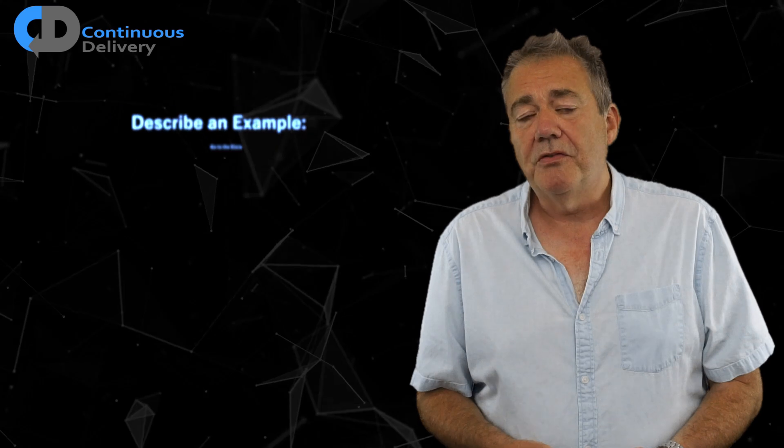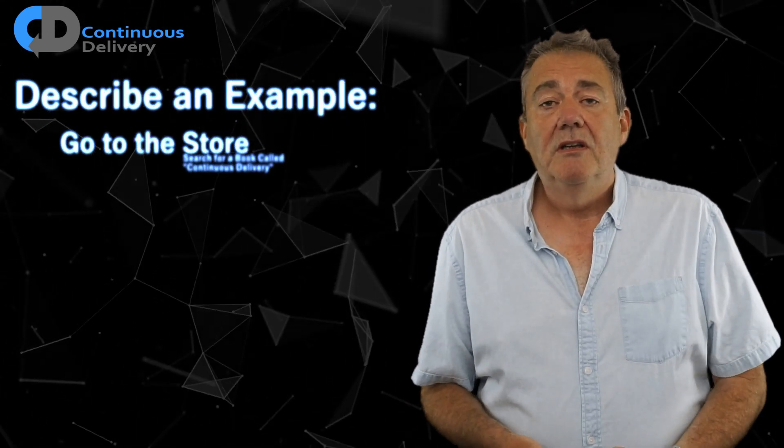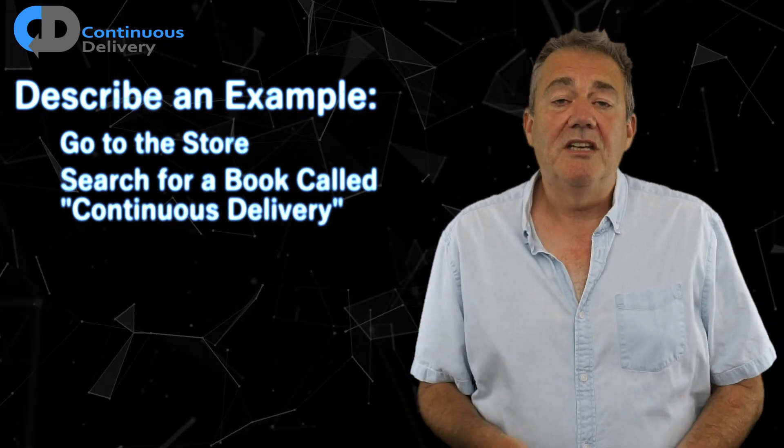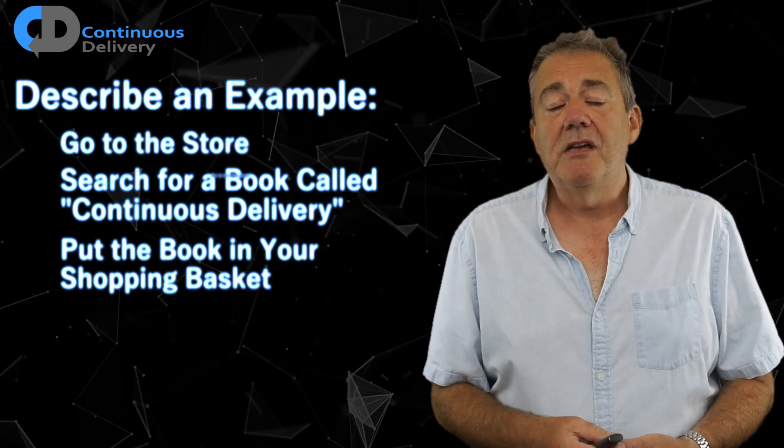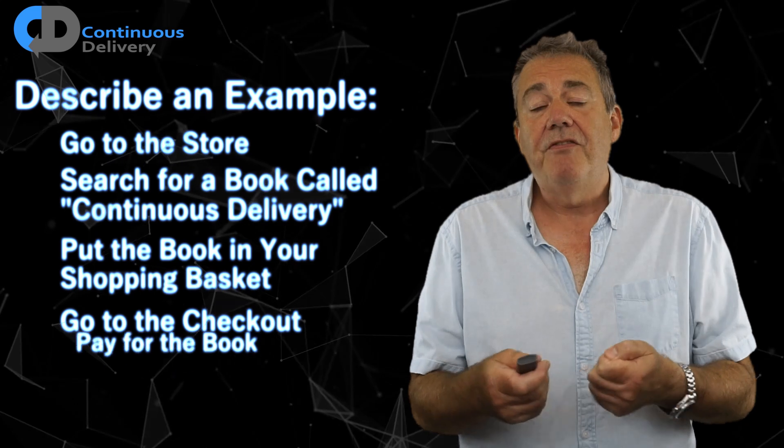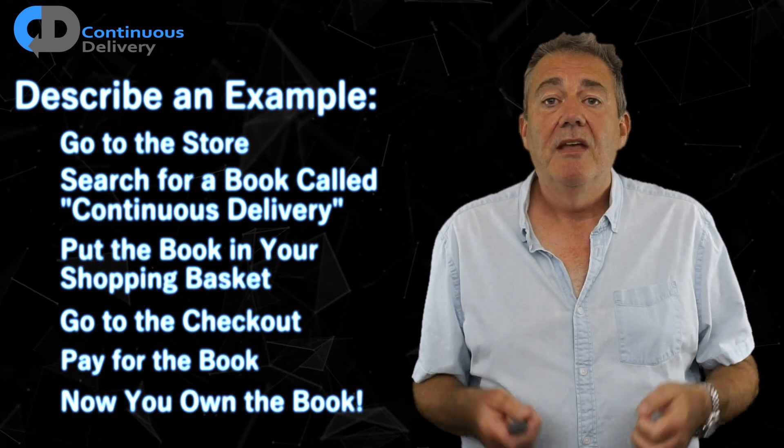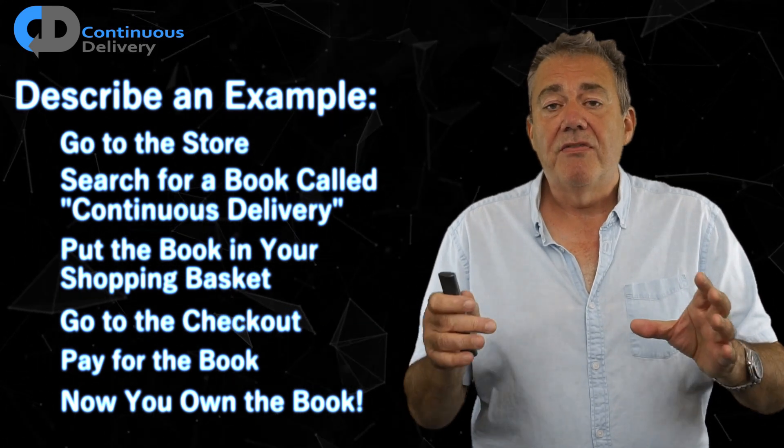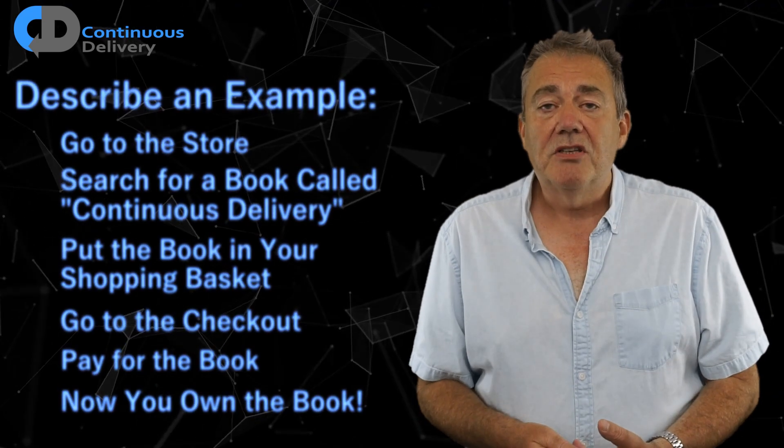Now, let's imagine how we're going to take that requirement, that user story, and turn that into an executable specification and acceptance test that evaluates what we'd like the system to do. Let's imagine somebody doing that. Let's imagine somebody buying the book. What are the steps that they would go through in order to buy the book? Well, first they go to the store. Then they're going to search for a book called Continuous Delivery in our example. They're going to put the book into the shopping cart. They're going to go to the checkout. They're going to pay for the book with their credit card. And now they own the book. That's it. That's the specification. That's the story. So, that's my test case.